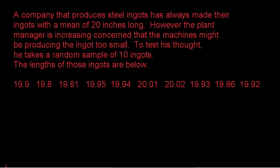So a company that produces steel ingots, steel ingots are literally just bars of steel. They're just a big bar of steel. And they sell these to companies that want to melt it down and make something out of the steel. So anyway, they have traditionally always made their steel ingots 20 inches long. However, the plant manager is increasingly concerned that the machines might be producing the ingots too small. So his claim is that maybe these ingots are smaller than 20 inches. Now that would be a major problem for people who are buying ingots off of us who think they're getting 20 inch ingots.